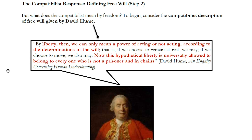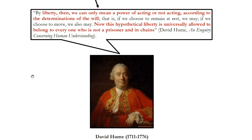The first step is just to say determinism is not so scary — it doesn't mean we're robots, it doesn't mean our actions don't matter. In fact, we want our actions to be caused by our characters. The next question is: how do we define freedom in a way that makes it compatible with determinism? Hume, a very famous compatibilist philosopher, gives the following definition of freedom in his Enquiry Concerning Human Understanding. He says: 'By liberty or free will, then, we can only mean a power of acting or not acting according to the determinations of the will. That is, if we choose to remain at rest, we may; if we choose to move, we also may.'